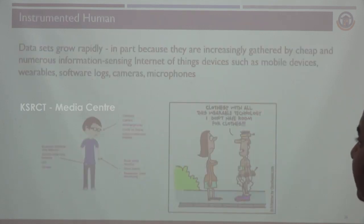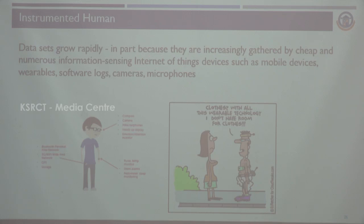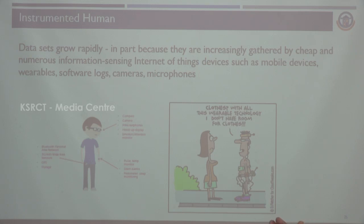Looking at this diagram, datasets are growing rapidly. If you take one human being, there is a camera, glasses, and watch with IoT and Bluetooth, 3G wireless, all these GPS storage available with one human being. Through this, a number of data are produced and all these things are managed.